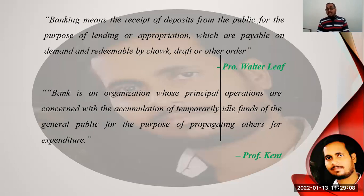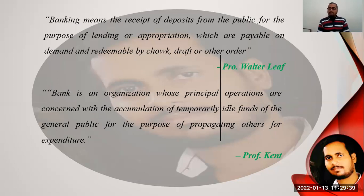Now the definition of Professor Kaint. According to Professor Kaint, a bank is an organization whose principal operations are concerned with the accumulation of temporarily idle funds of the general public for the purpose of advancing to others for expenditure. If people need to do expenditure, the bank or institution provides loans temporarily, and after a period they must return that money with the charge of interest.